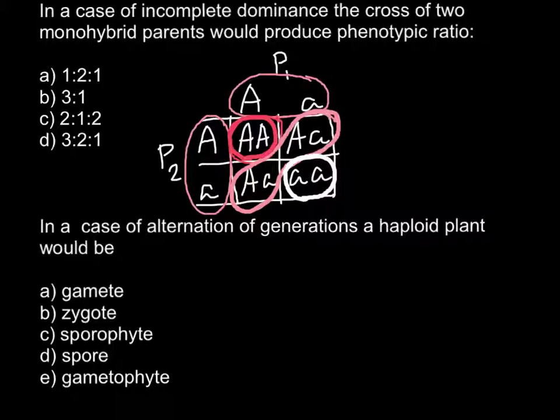So we have ratio 1 red, 2 pink, and 1 white. Of course, if we take this trait as a color, there can be different traits. And as you see, the correct answer would be A, so we would have 1 to 2 to 1 ratio.